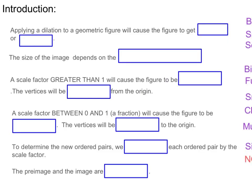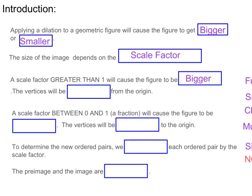Now let's look at a couple of definitions that are going to help us better understand what a dilation is and how to do one. When applying a dilation to a geometric figure, this will cause the figure to get bigger or it could cause it to get smaller. The size of the image depends on the scale factor. A scale factor greater than one will cause the figure to get bigger, and the vertices will be further away from the origin. A scale factor between 0 and 1, or a fraction, will cause the figure to get smaller and the vertices will become closer to the origin. To determine the new ordered pair, we multiply each ordered pair by the scale factor.